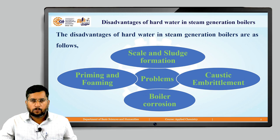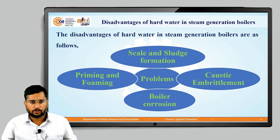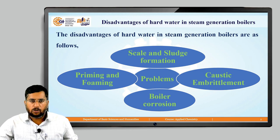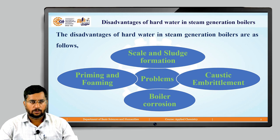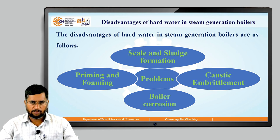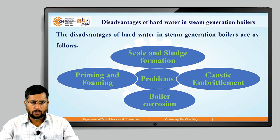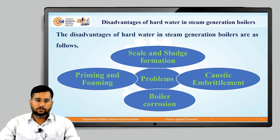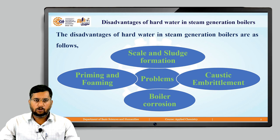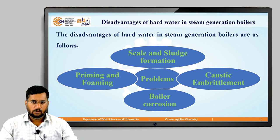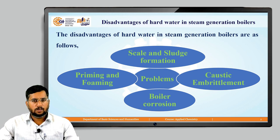As we know, for steam generation in boilers we use feed water. If that feed water contains different types of impurities — dissolved ionic impurities producing cations and anions, dissolved organic salt impurities, dissolved gases, colloidal impurities, suspended impurities, biological impurities, and fluoridating impurities — these lead to different problems in the boiler: scale and sludge formation, caustic embrittlement, and boiler feed water priming and foaming. In this lecture we will discuss scale and sludge formation and caustic embrittlement.